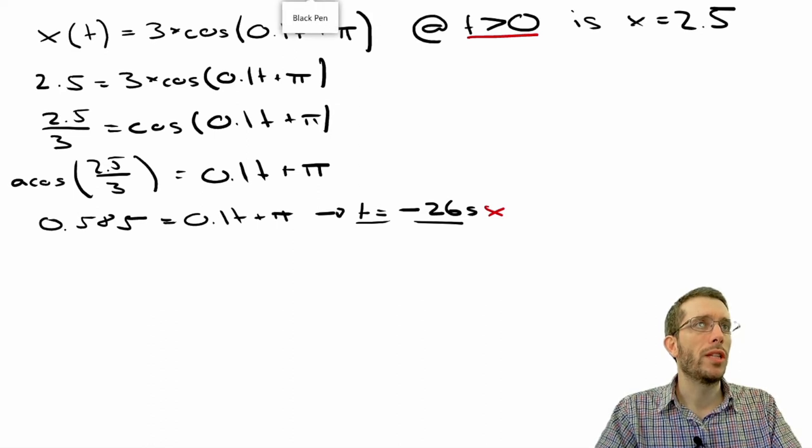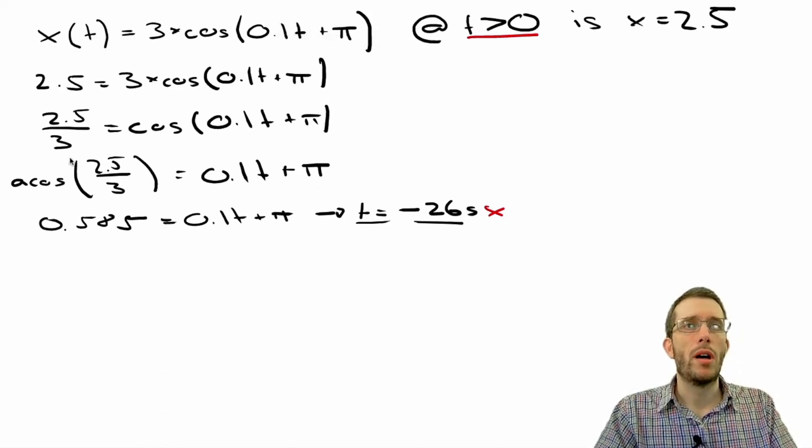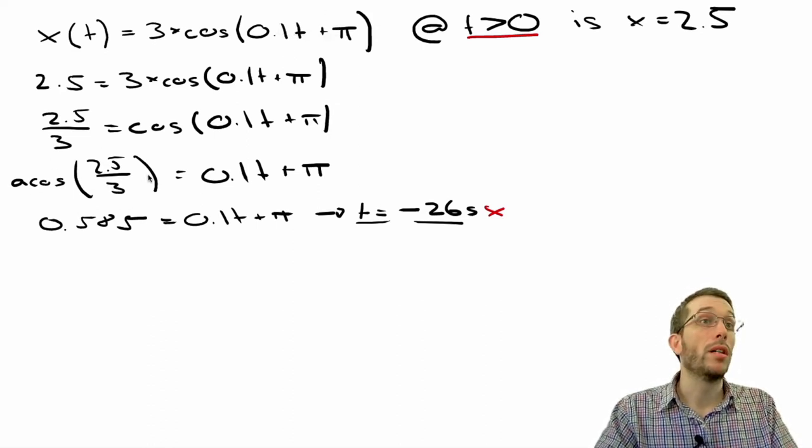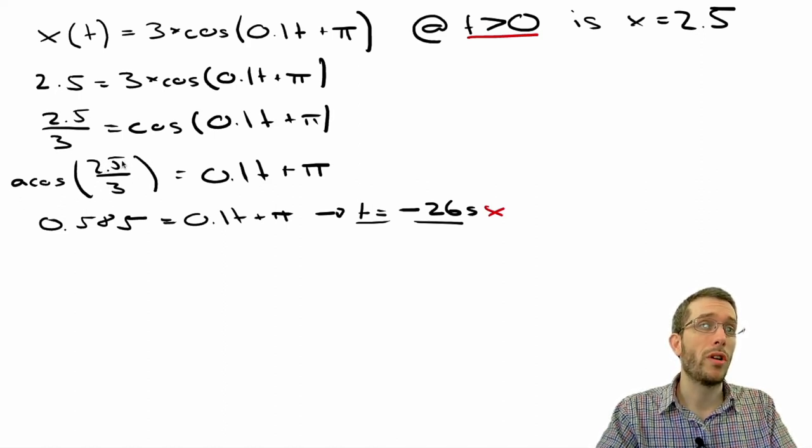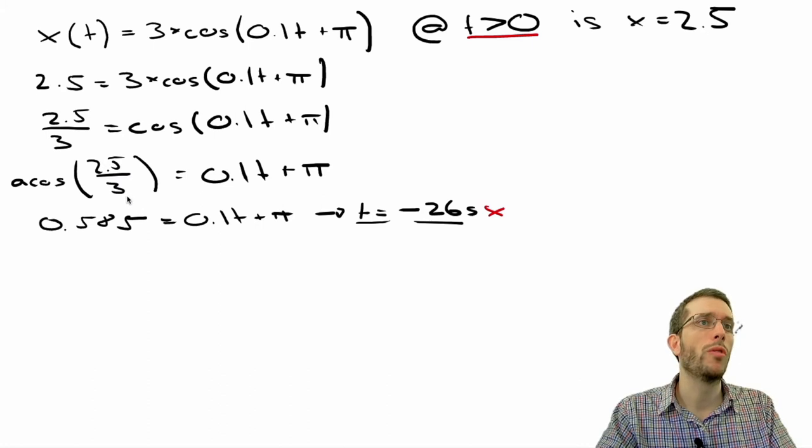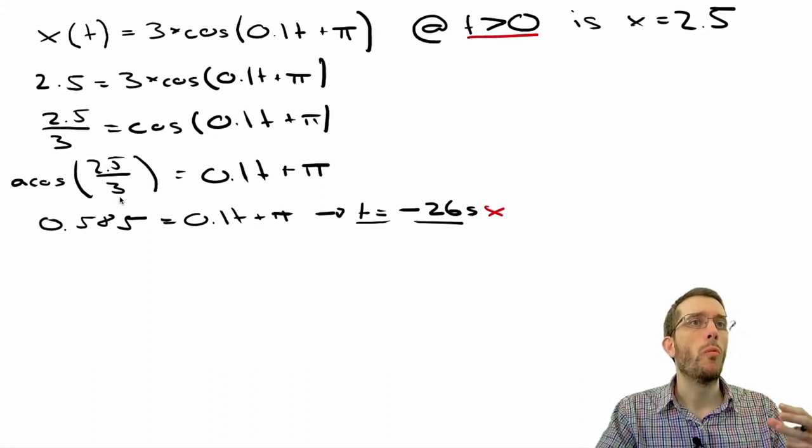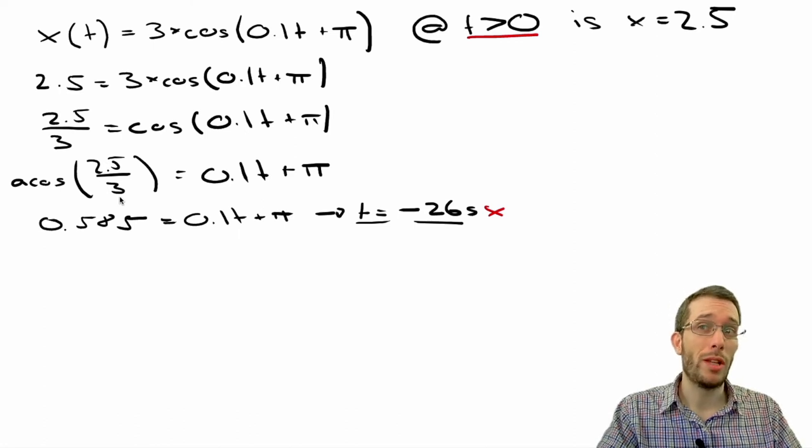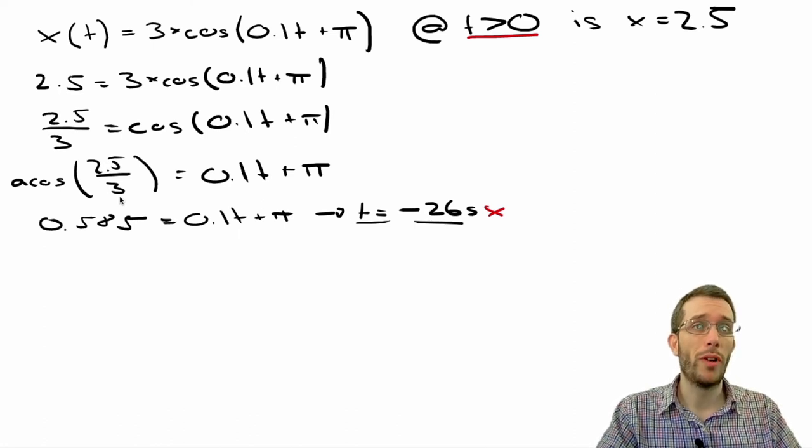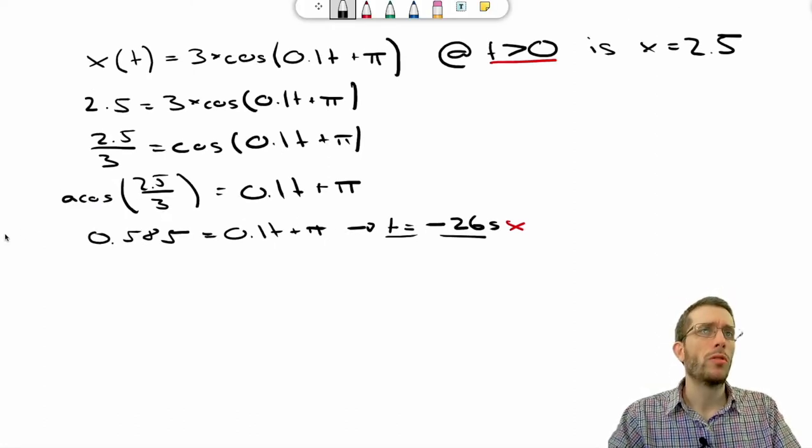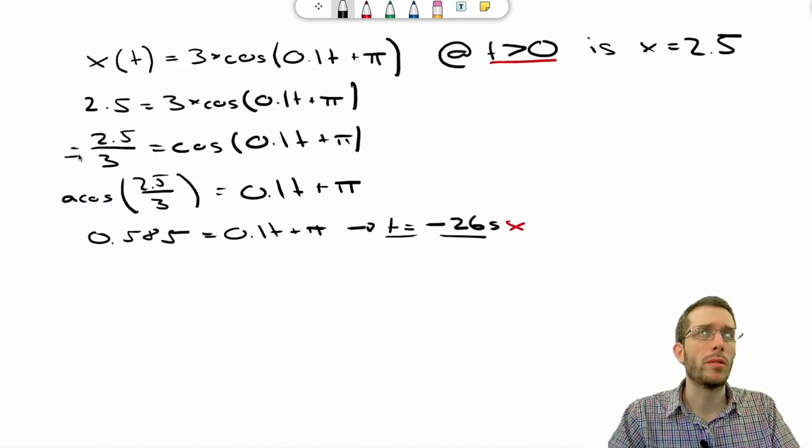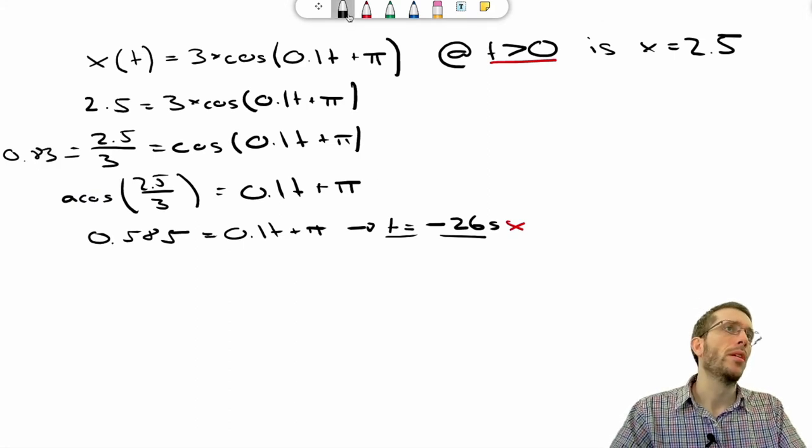Now, what you have to realize first is by asking the calculator to give you the cosine inverse function of 2.5 over 3, you're actually asking the calculator for which angle, if I do cosine of that angle, will I get 2.5 over 3? 2.5 over 3, if you don't really like this, that's by the way equal to 0.83.